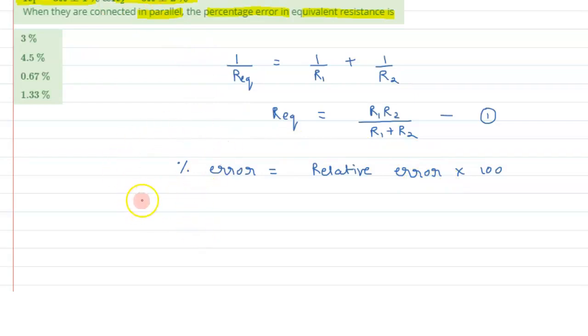So we can write as per the formula, for relative error it can be written as error upon its magnitude. And that equals, here both are getting multiplied, so we can write it as error upon its magnitude. Errors always get added up whether they are getting multiplied or divided. So here both are getting multiplied so we are adding them up.